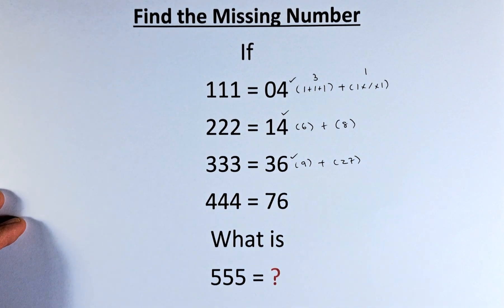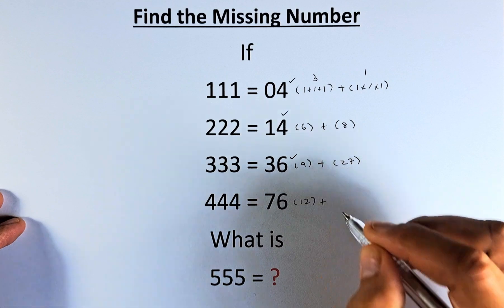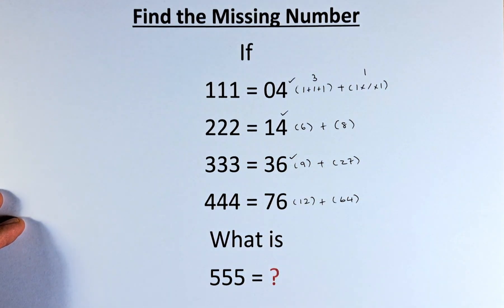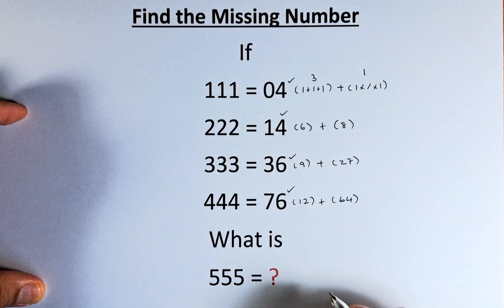And in the fourth row, 444 equals 76. So 4+4+4 is 12, 4×4×4 is 64, and 64+12 gives us 76. So what then is 555?